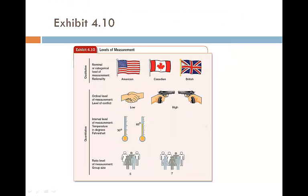Now let's talk about the levels of measurement. In operationalization, there are four levels of measurement. The first is called the nominal level. Nominal level measurement refers to categorical variables — for example, whether you are American, Canadian, British, Chinese, or Mexican. The second is called ordinal level measurement, where you have a ranking order — low versus high — so you can see a ranking order within that.